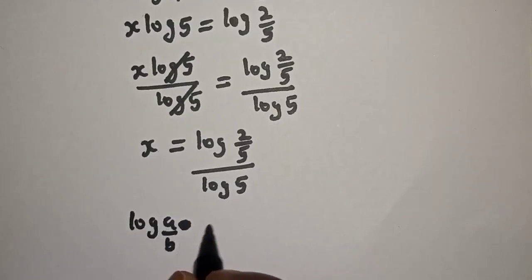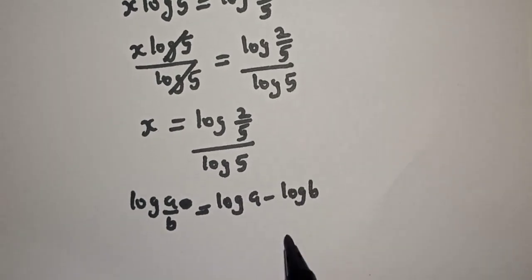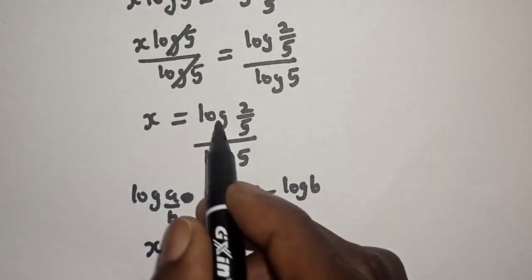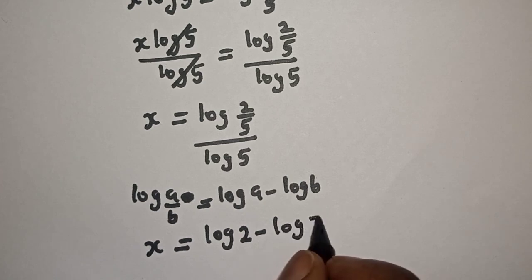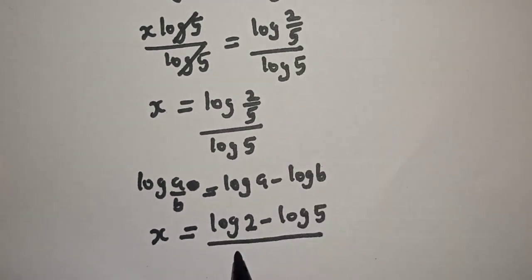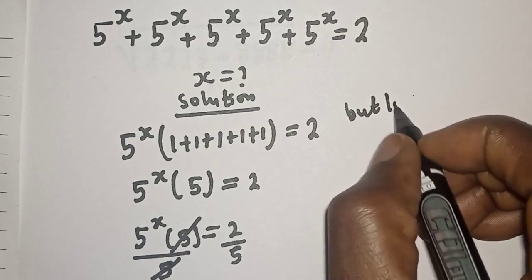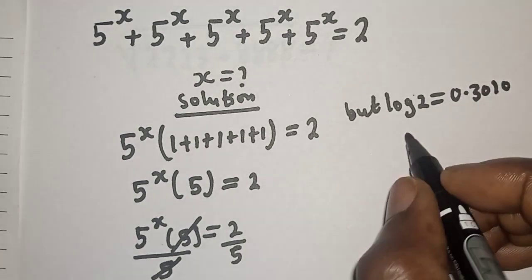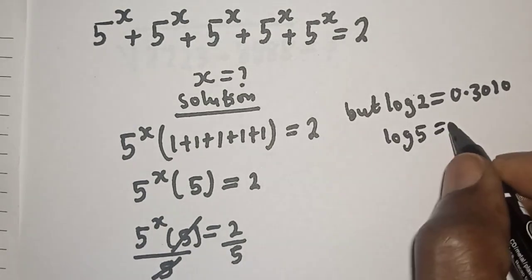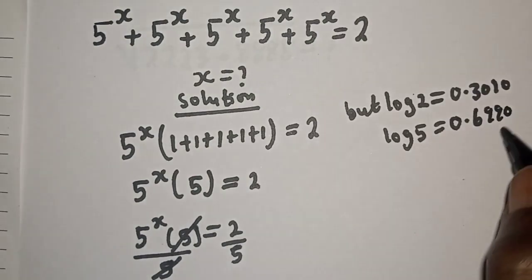Remember this rule: log(a/b) is equal to log a minus log b. Then s is equal to (log 2 minus log 5) divided by log 5. Log 2 is equal to 0.3010, and log 5 is equal to 0.6990.